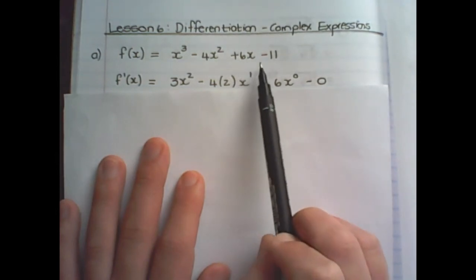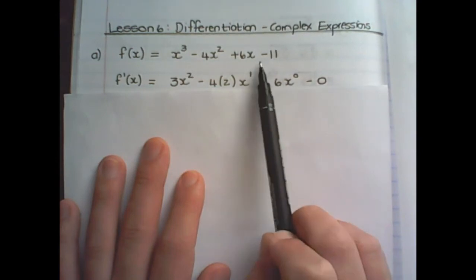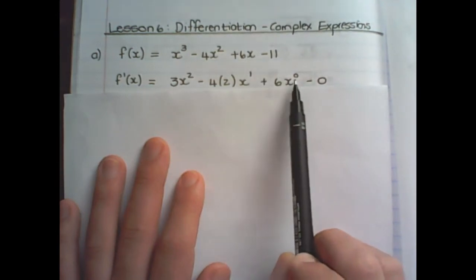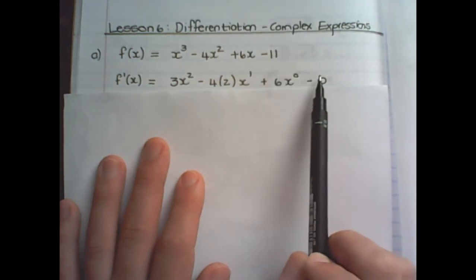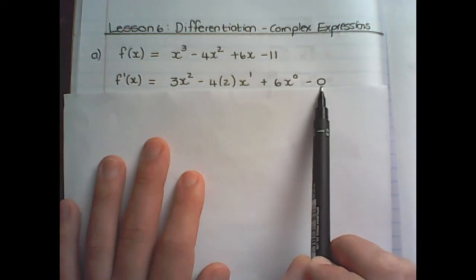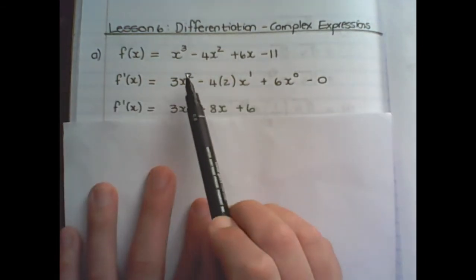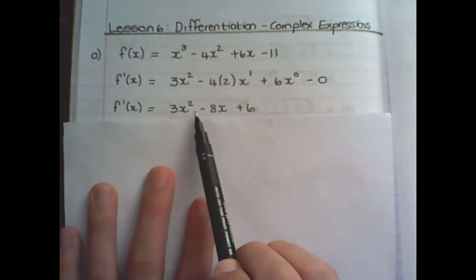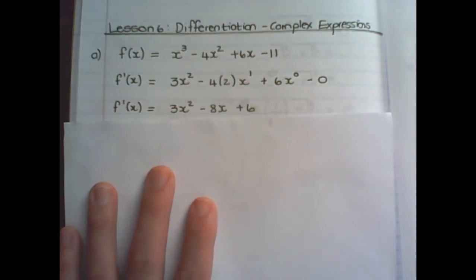For the third term: 6 times 1 in the exponent, and I subtract 1 from the exponent. Minus 11 becomes 0 because there is no variable. So I have 3x squared minus 8x plus 6.